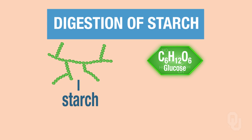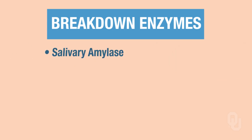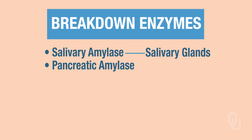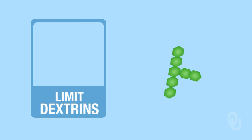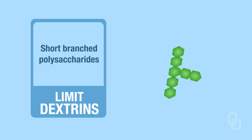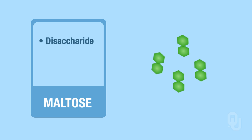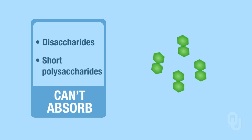Here we've ingested starch—maybe you had some pasta or crackers for dinner that have a lot of starch in them. We've got to start breaking it down. We have two enzymes that can assist with the breakdown of starch: salivary amylase and pancreatic amylase. Salivary amylase is produced by your salivary glands, and pancreatic amylase is produced by the pancreas. This enzyme can break down starch into two different products: limit dextrins, which are short-branched polysaccharides, or maltose, which is a disaccharide consisting of two glucose monomers. That doesn't do us much good either, because we cannot absorb disaccharides or short polysaccharides.